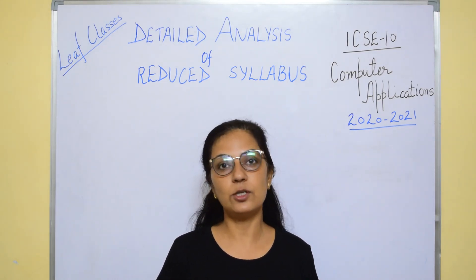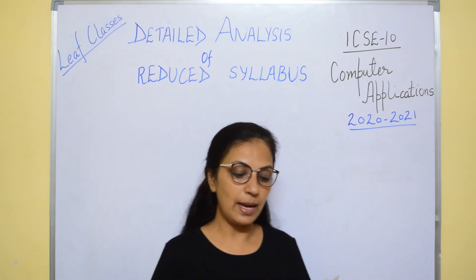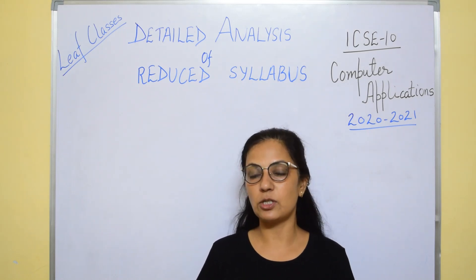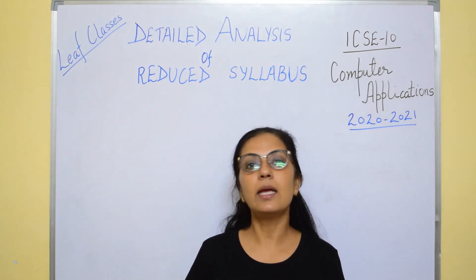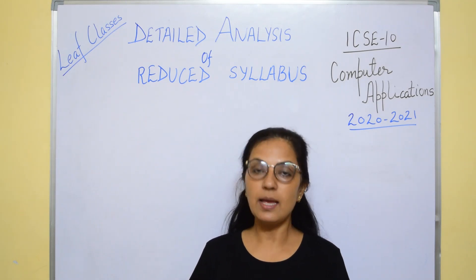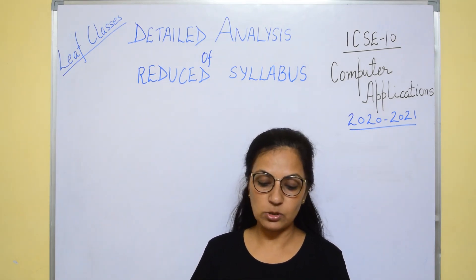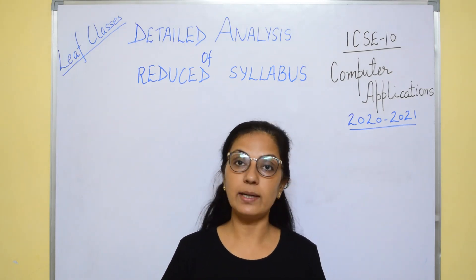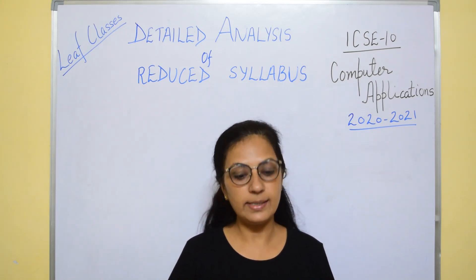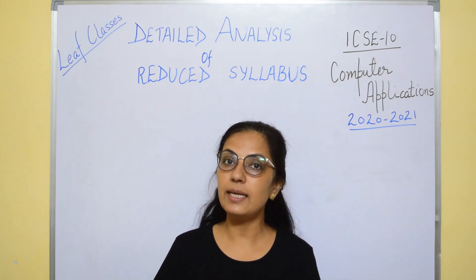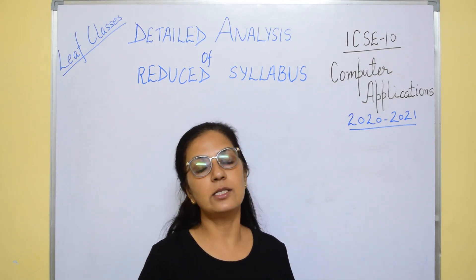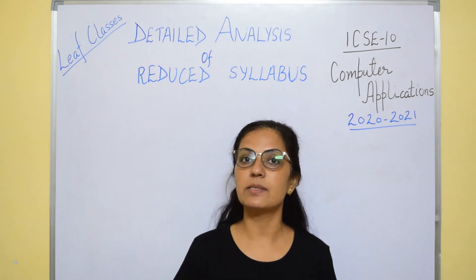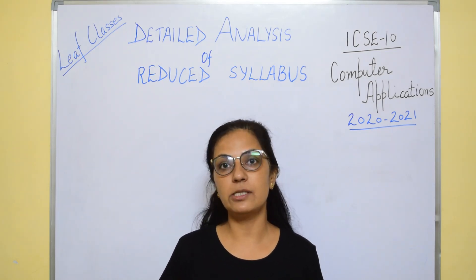Then we move on to arrays. In arrays you have only single dimensional array — the double dimensional array is removed from the syllabus. In single dimensional array, there were two searching and two sorting techniques. Now you have only one searching technique: linear search is present. And in sorting, only bubble sort is present in the syllabus. So you have linear search and bubble sort — the rest of what you were doing in arrays is still there.